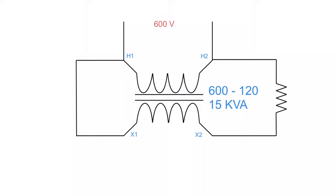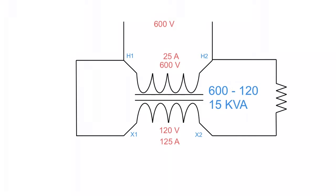As with any transformer, the first step is to determine the rating of your windings. This is a 600 to 120 volt, 15 kVA transformer, meaning the high side is rated at 600 volts and the low side at 120 volts. We use the 15 kVA to determine current through each winding: 15,000 divided by 600 gives 25 amps rated on the high side, and 15,000 divided by 120 volts gives 125 amps rated on the low side.